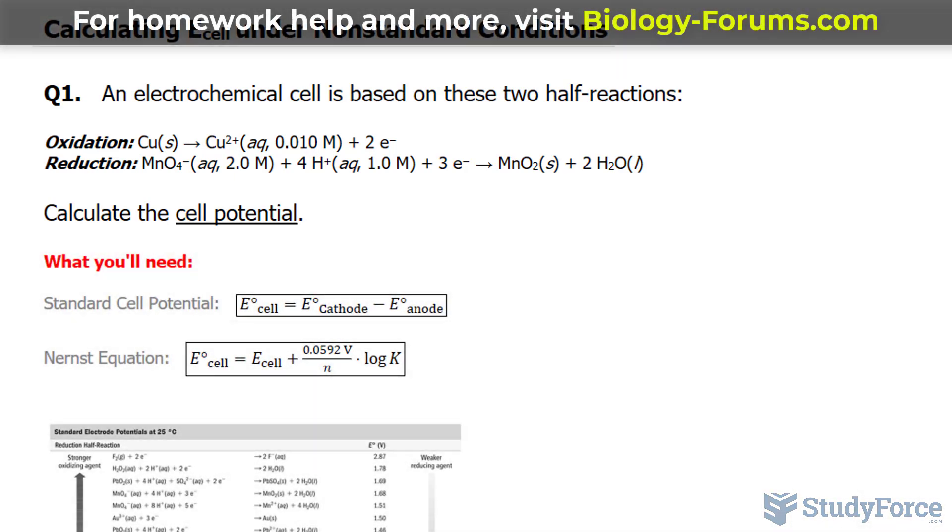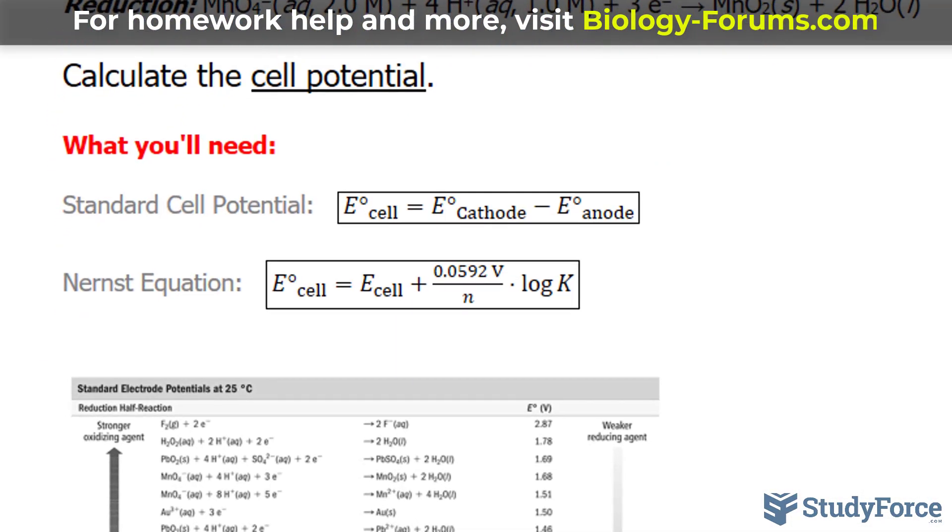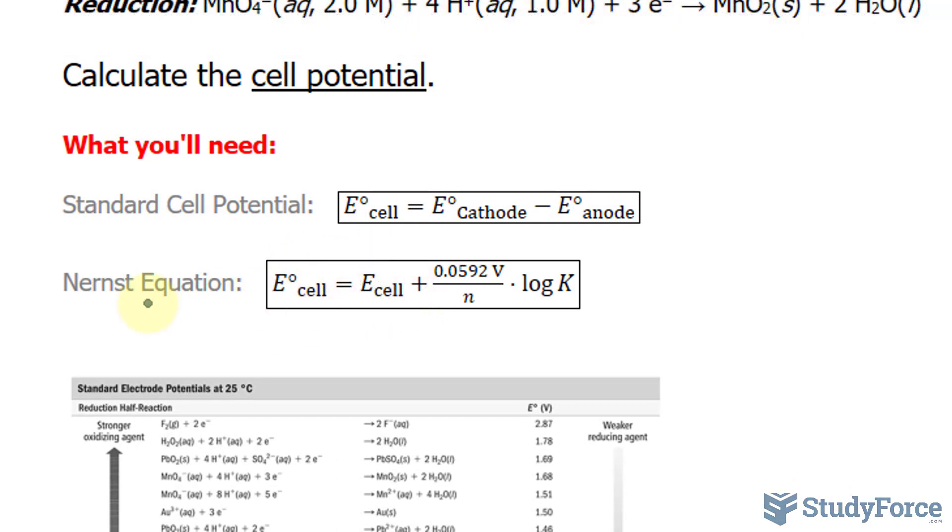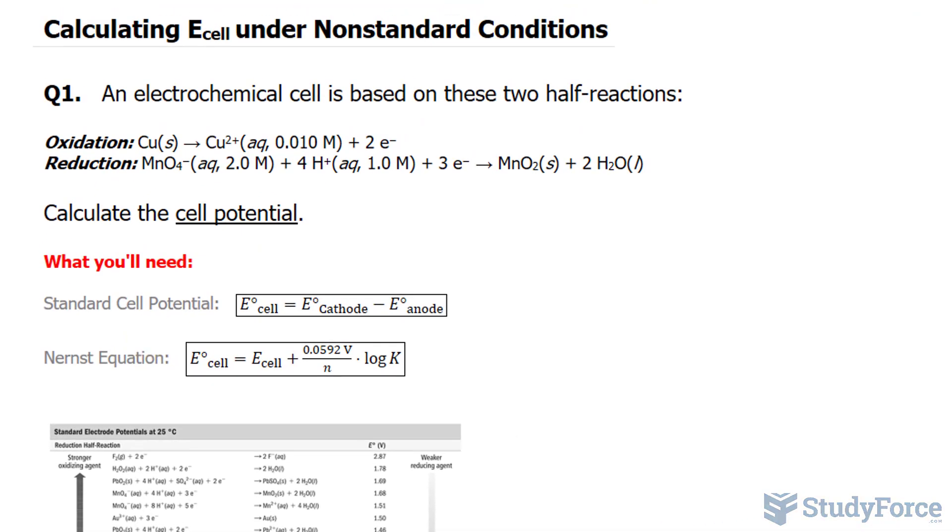Unlike in previous videos, this time we are looking for E_cell as opposed to the standard cell potential. We can use the Nernst equation to do that. But there's a lot more that we have to do before we can actually start using this formula. The first thing that I want to do is make note of everything that they've given us. They've given us the concentration of Cu²⁺, the concentration of MnO₄⁻, and finally the concentration of H⁺.